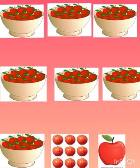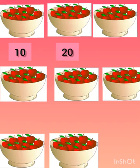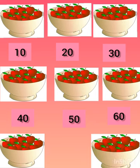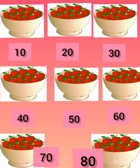Now I am adding 9 apples in 70 — how many apples will be there? 79. And now I will add 1 more — then it will become a basket of 10 apples. Now we have 1 more basket of 10. So let's count how many apples there are altogether: 10, 20, 30, 40, 50, 60, 70, and 80. We have 80 apples altogether.